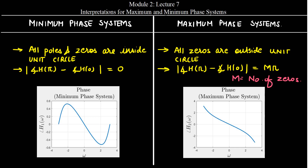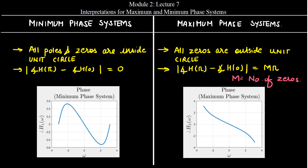Hello everyone, welcome to another lecture of the course Digital Signal Processing. In the previous lecture we have seen the concept of minimum phase systems and maximum phase systems. We have seen that if a system has all the poles and zeros inside the unit circle then it is referred to as the minimum phase system. In the maximum phase system, all the zeros are outside the unit circle and the phase deviation is m·pi, where m is the number of zeros.